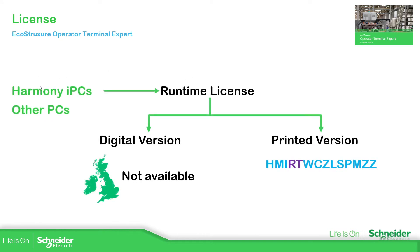If we don't use the HMI — so if we go for an IPC or other kind of PC — we must need a runtime license. Again we have digital versions and printed versions, but at the moment the digital ones are not available in the UK and Ireland. So we need to go to the printed version; you can see it starts with HMI, RTE for runtime, and so on. Remember it or go to the catalog for EcoStruxure Operator Terminal Expert.